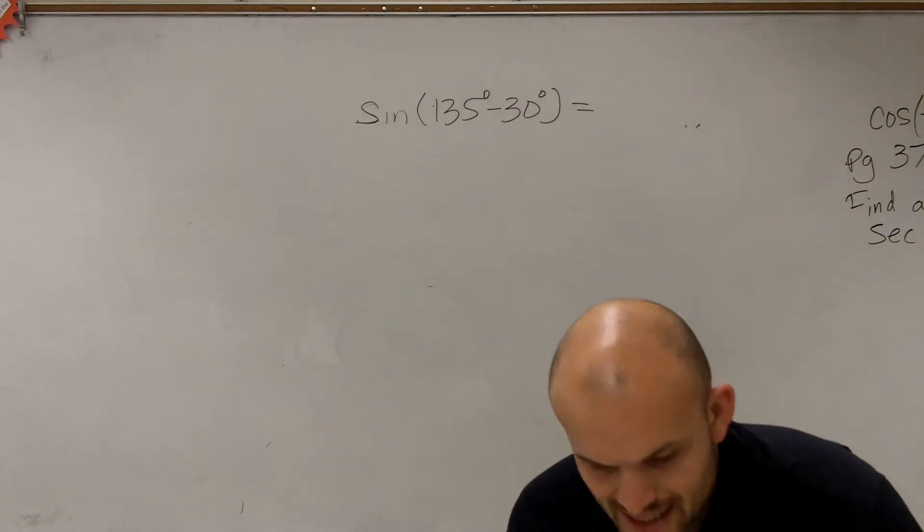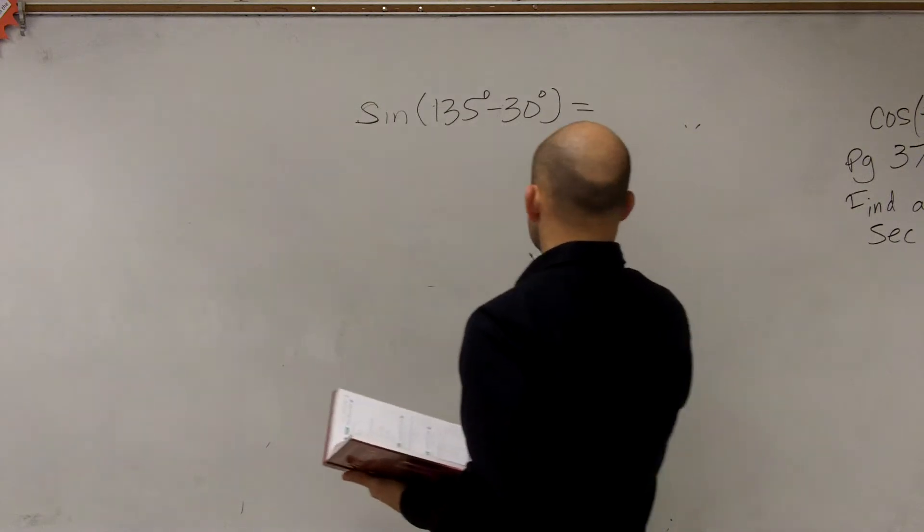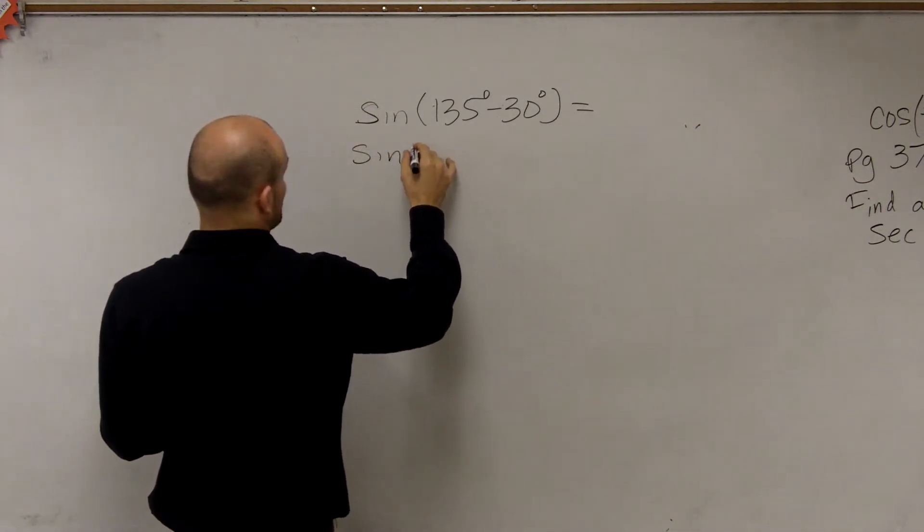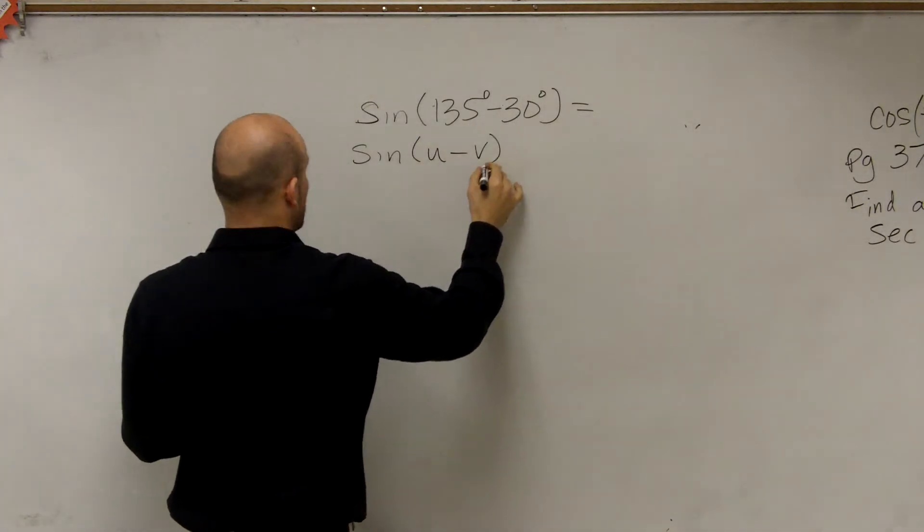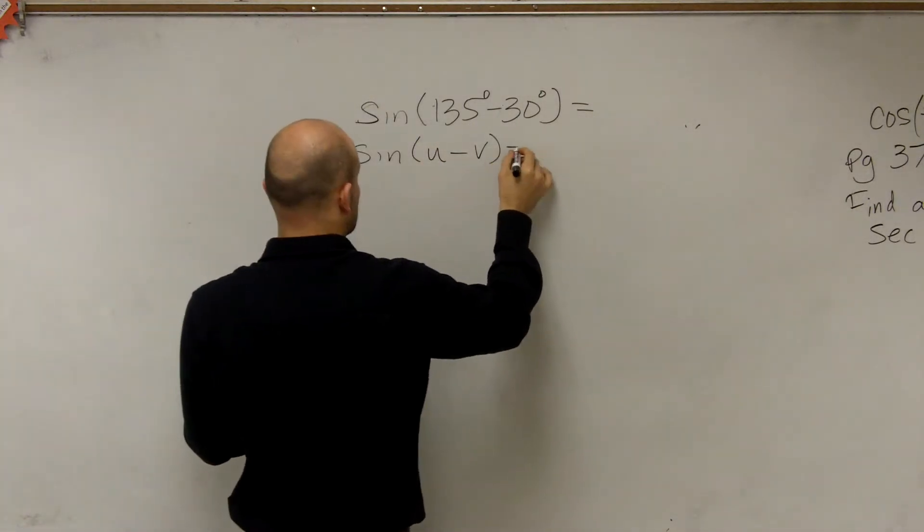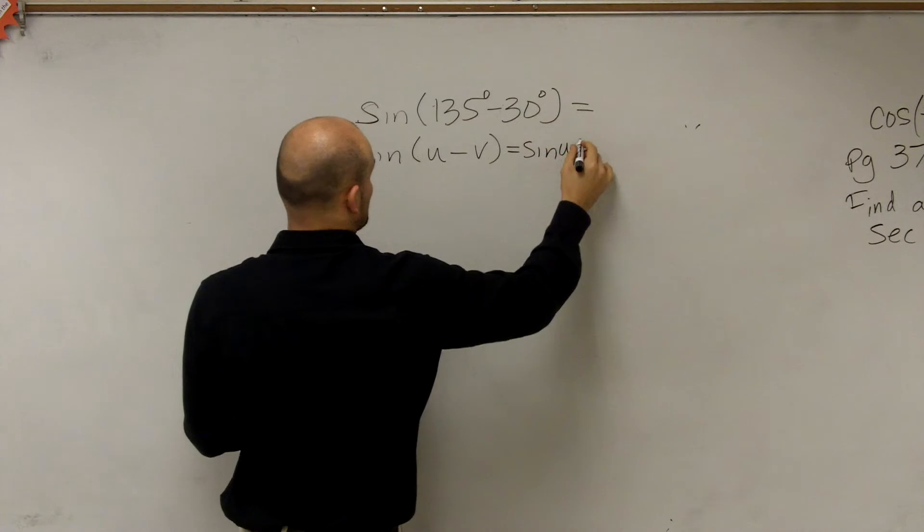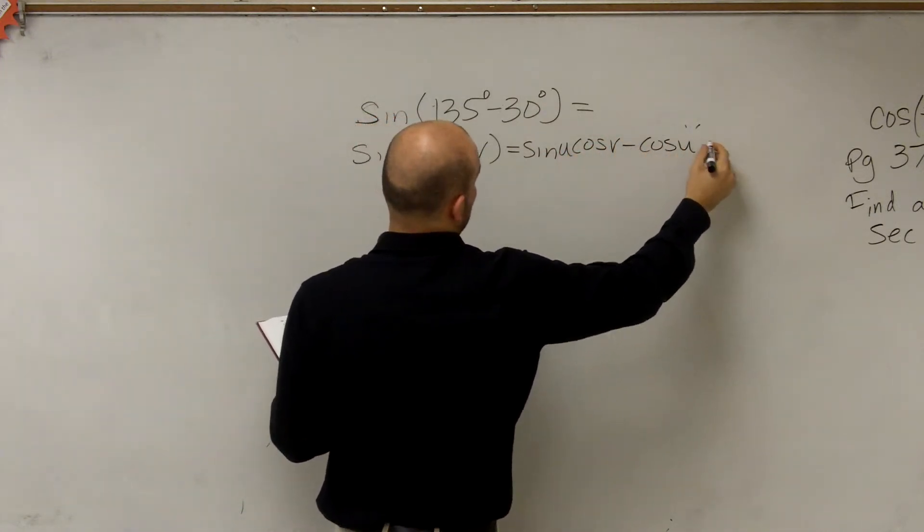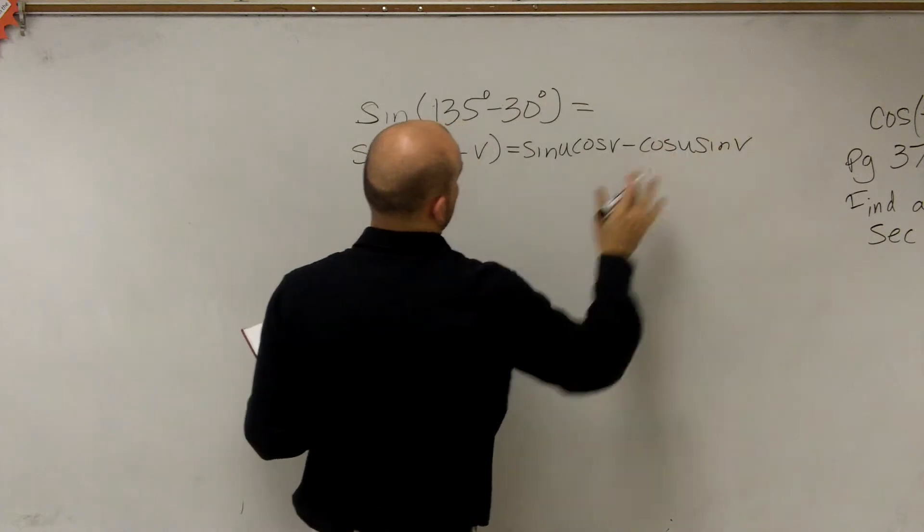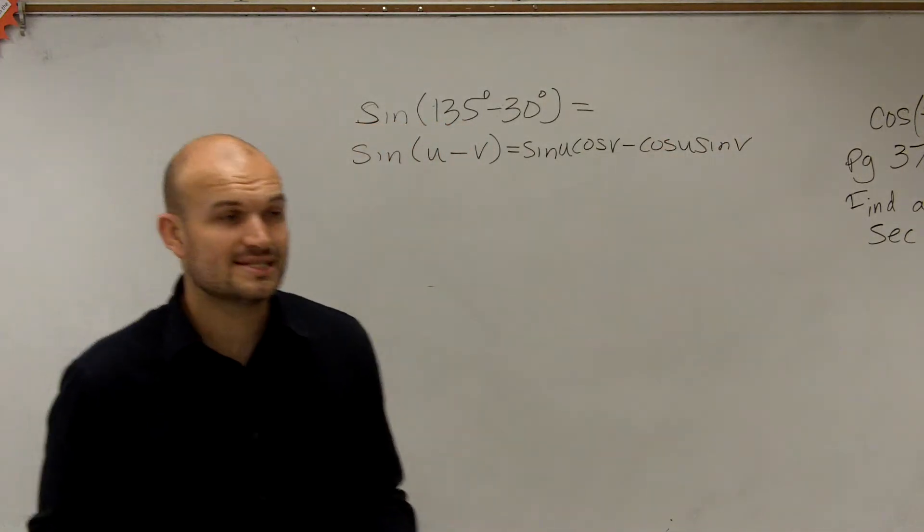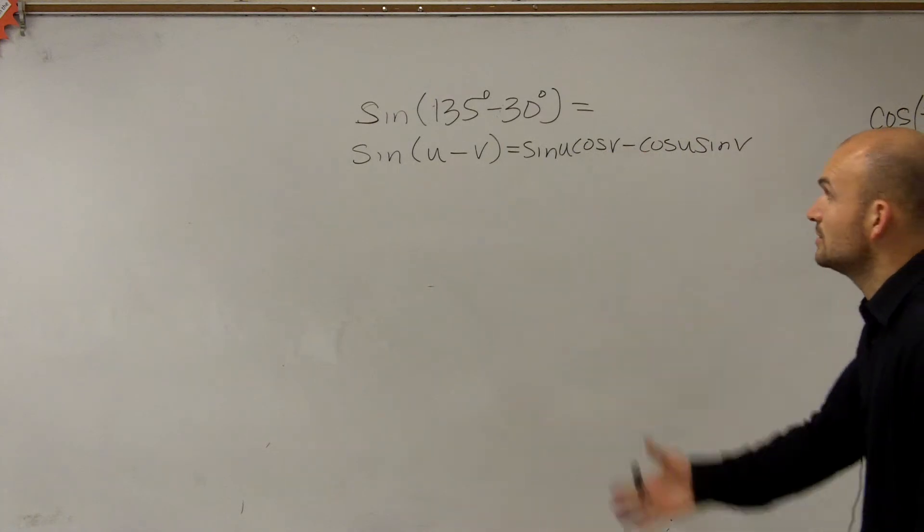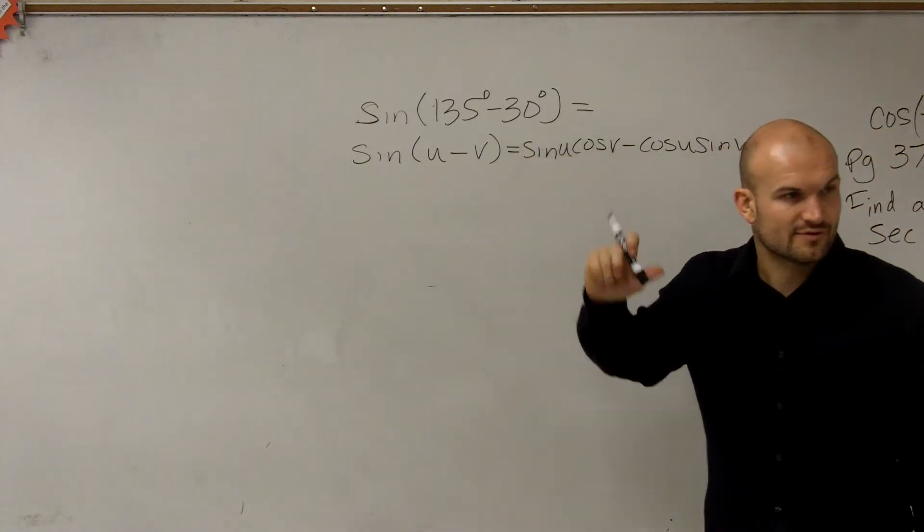All right. So to evaluate for the sine of the difference, what we notice is that formula is going to equal: the sine of one angle minus another angle is equal to the sine of u times cosine of v minus the cosine of u times sine of v. So it's a little bit different than the sum for the cosine, which we just went over. Pretty similar, but different.